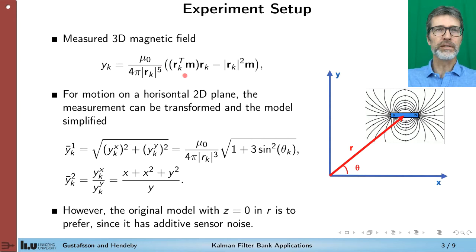So I prefer to keep this original model because the sensor has additive noise and we don't make any damage on the sensor model if we keep this form. And if we want we can set the altitude parameter to zero.